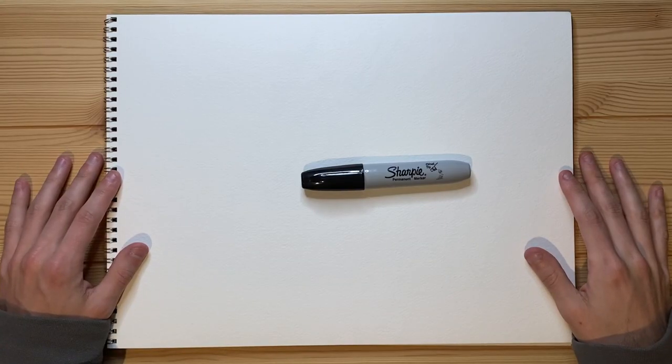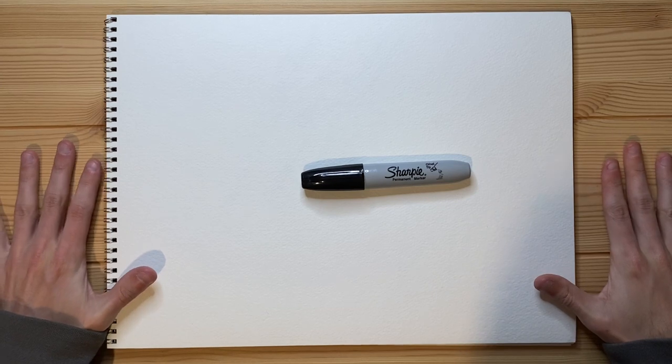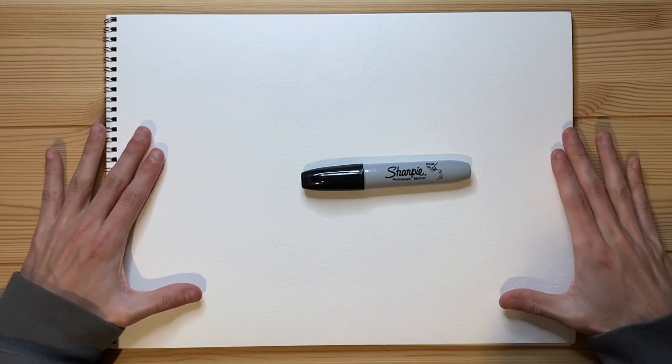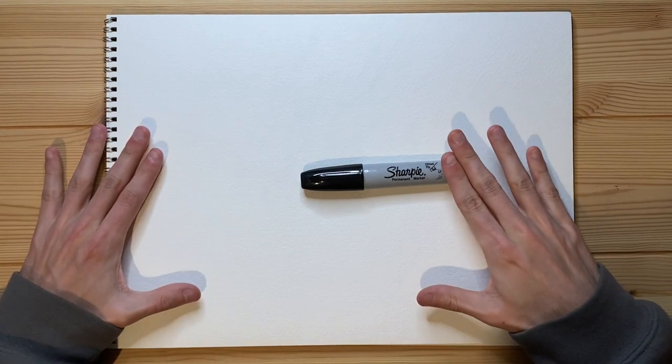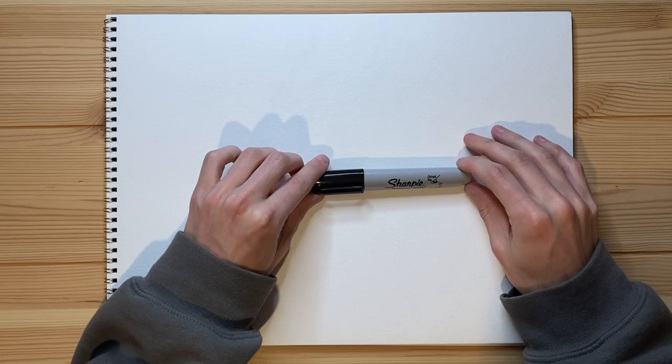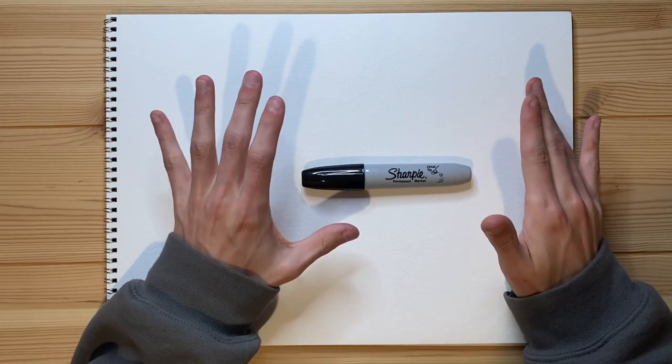Alrighty, so today I'm going to be drawing a super big fish on a super big sheet of paper. I'm going to be using a Sharpie, chisel tip permanent marker to draw the super big fish.